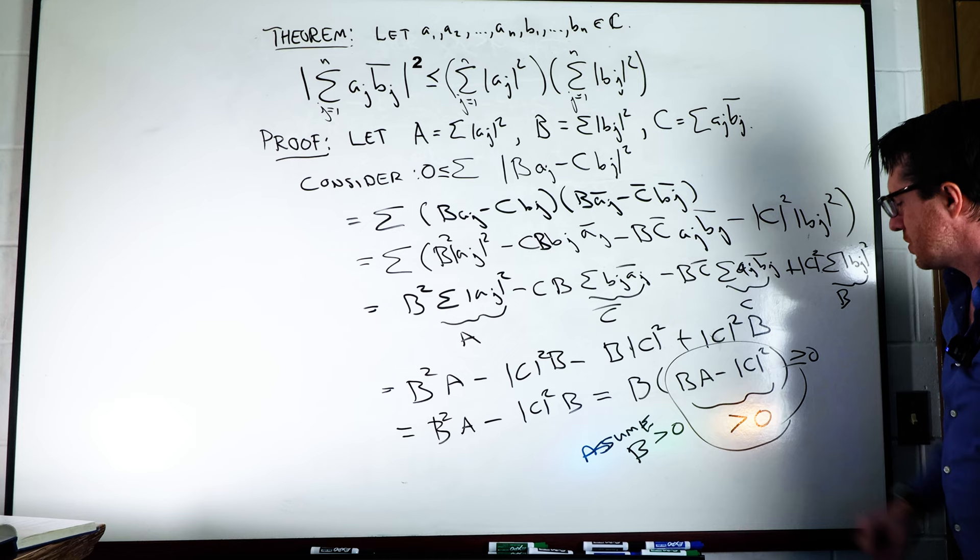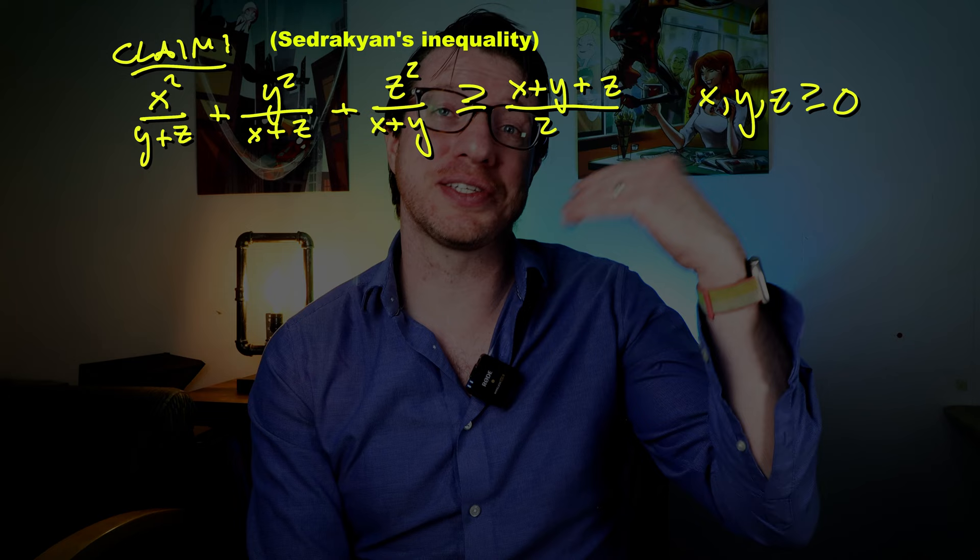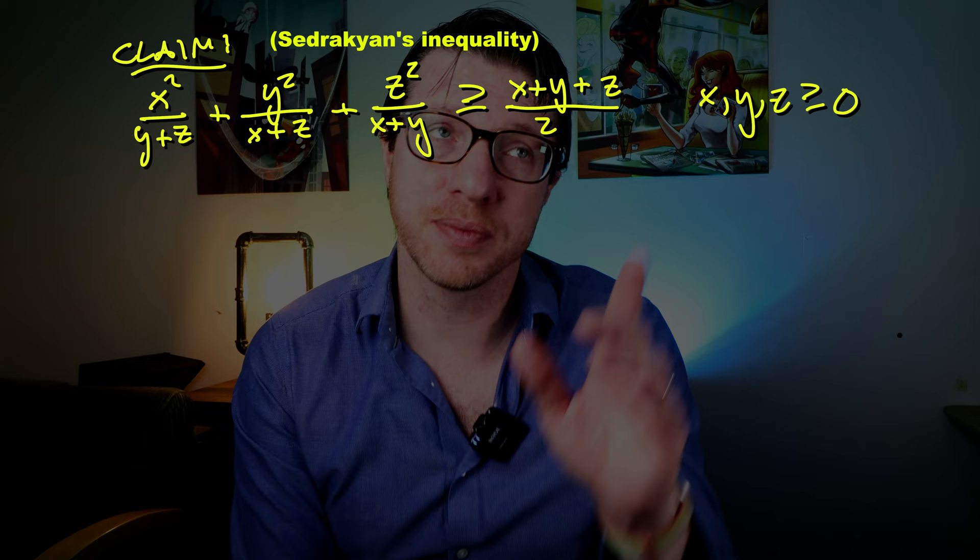Now we can immediately use the Cauchy-Schwarz inequality to prove this inequality: x^2/(y+z) + y^2/(z+x) + z^2/(x+y) ≥ (x+y+z)/2 for x, y, and z positive.